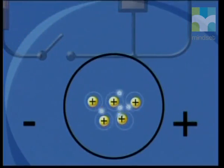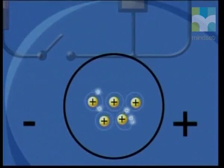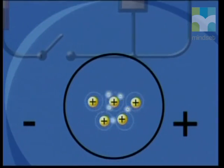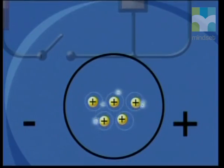The moving charges are electrons. They are able to move freely from atom to atom inside the metal. Notice that they move randomly in all directions. There is no current in this conductor.